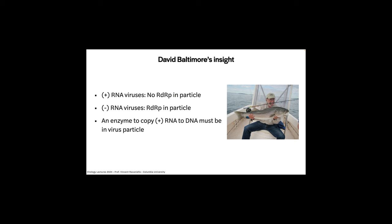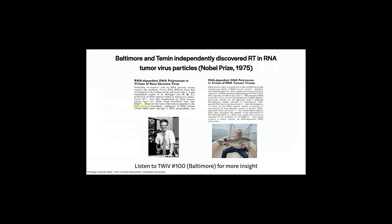Then David Baltimore, who made the Baltimore scheme, came at it from a different logic. He said RNA viruses with plus-stranded genomes don't need a polymerase in the particle because they can be translated as soon as they get into cells. Minus-strand RNA viruses have to have a polymerase in the particle. So he said if Temin is right, then there must be an enzyme in the particle to convert RNA to DNA, because they thought such an enzyme did not exist. They independently discovered this enzyme in RNA tumor viruses, and it was called reverse transcriptase.